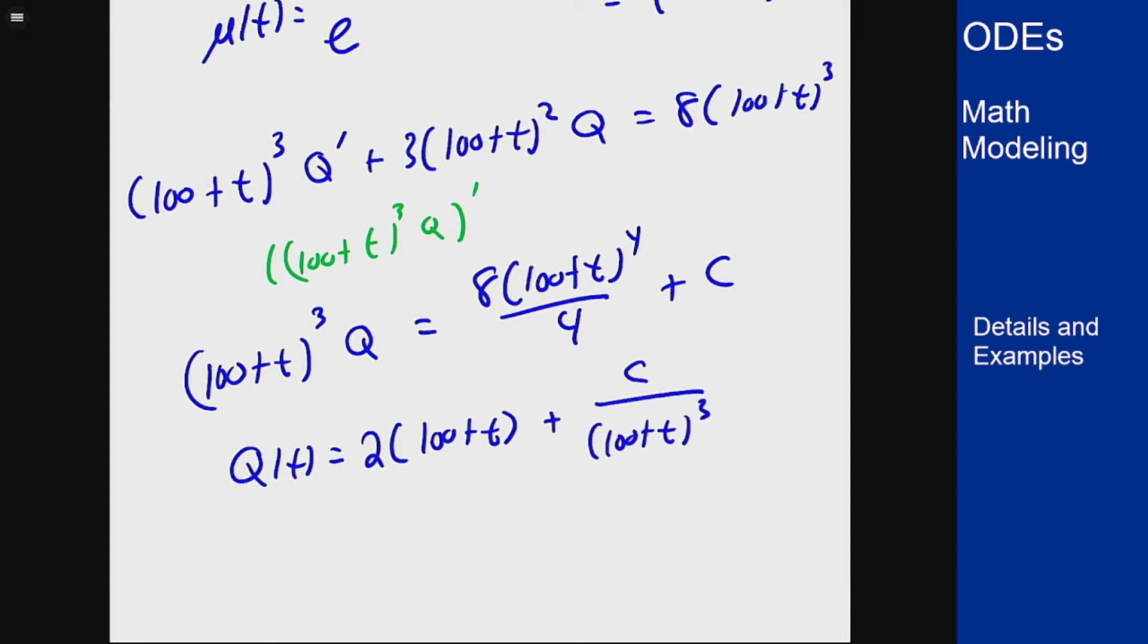And now our initial condition said that Q(0) was 10. If I plug in 0 here I get 200 because the t goes to 0, plus c over 100 cubed.